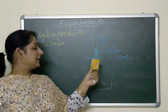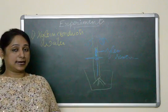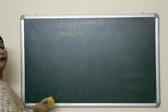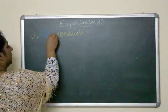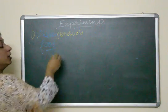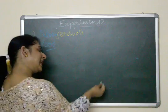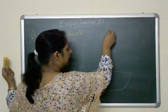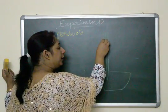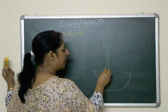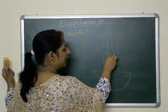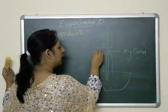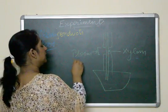This experiment proves that xylem conducts water inside plants. The next experiment shows that phloem conducts food. We take a potted plant and remove the phloem from the outside of the stem, while leaving the xylem intact.